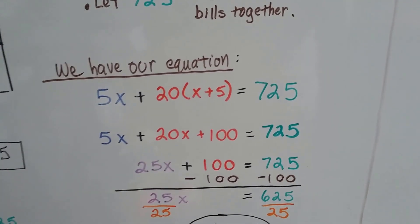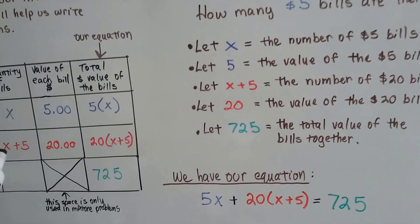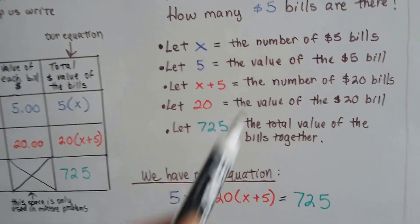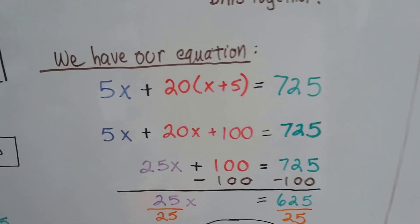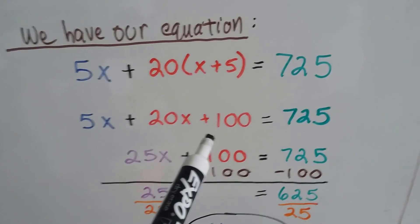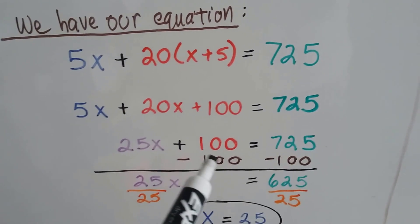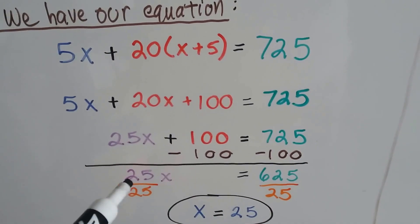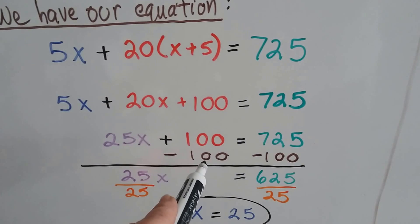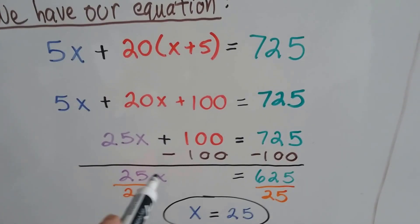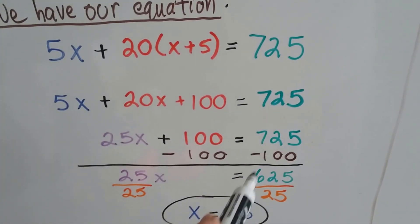We have to isolate this X, that's how many $5 bills there are, to get our answer. We have a plus 100 here, so what we can do is take away 100 from each side of the equation and that creates a zero pair here and it eliminates it. Now we just have 25X equals 625.